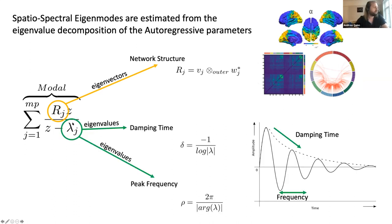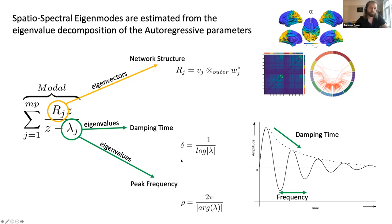From the eigenvalues lambda, we can get two other parameters: the peak frequency of an oscillation and the damping time of an oscillation. Peak frequency is, as we would normally expect, the rate at which a cycling signal repeats. The damping time is potentially more interesting — it tells us how quickly an oscillation will return to zero if left alone. We have each of these parameters from each of our modes. So rather than integrating across a priori frequency bands, we can look at the distribution and composition of these parameters, which fall out of the eigenvalue decomposition.